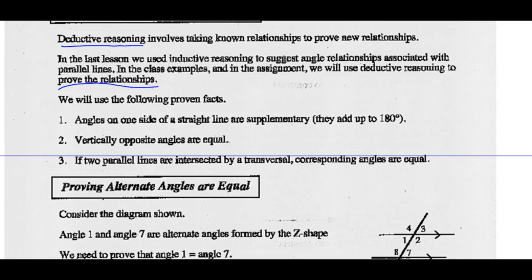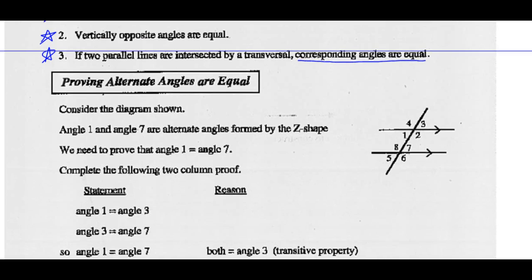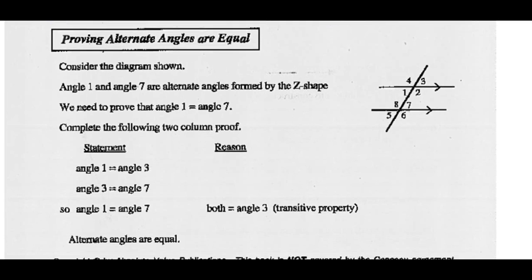We're going to use the following proven facts: angles on one side of a straight line are supplementary, meaning they add up to 180 degrees. Vertically opposite angles are equal. And if two parallel lines are intersected by a transversal, corresponding angles are equal. We're going to use these three proven facts to prove that alternate angles are equal.